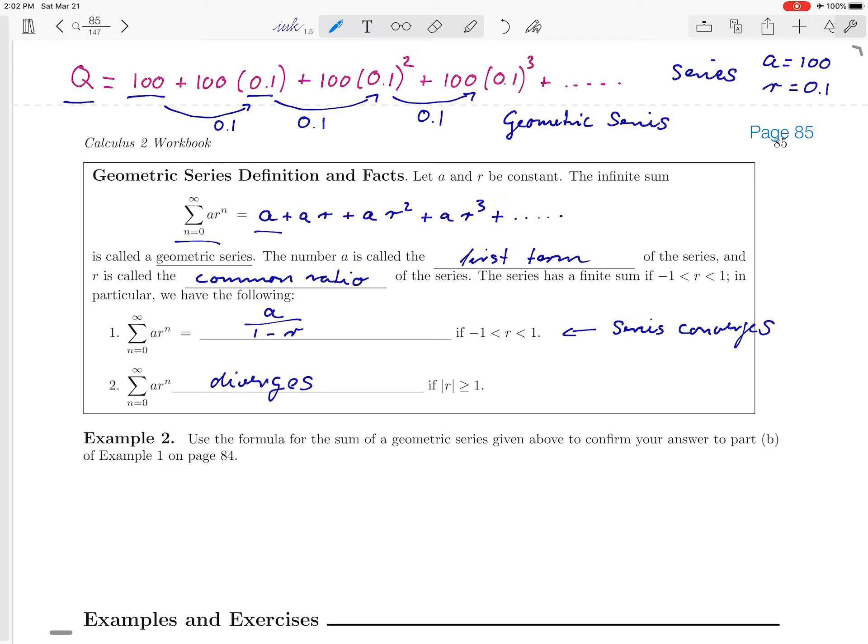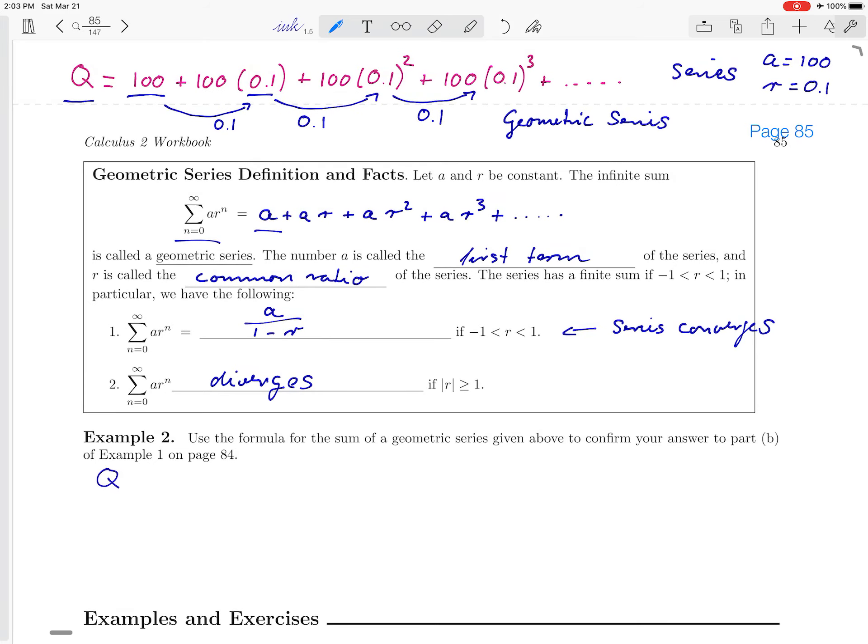Going back to our example, our drug example from before, let's illustrate what is happening here. So in example two, we are asked to use a formula in the box for the sum of the geometric series to confirm our answer that we got in part b from example one. So in part b of example one, we determined that q was 111.1 basically.